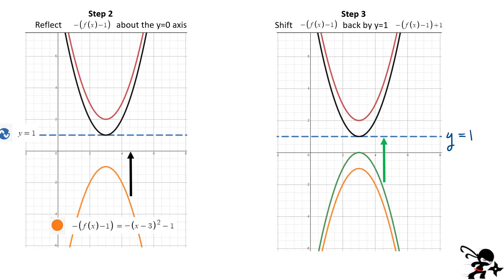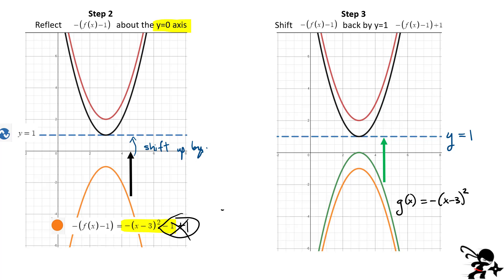After reflecting about y equals zero we're left with the orange function, and now we need to go back to our original problem — reflecting about y equals 1. So we shift everything back up by 1 unit. To shift up by 1, we add 1 to all the values. Our final equation g of x — represented by the green curve — is obtained by adding 1 to the orange result. The plus 1 and minus 1 cancel, and we're left with g of x equals negative x minus 3 squared. That is the green function.